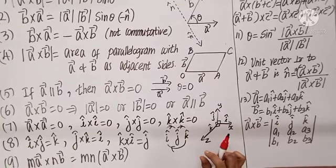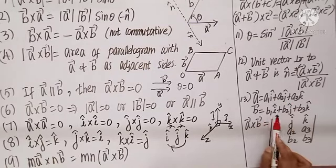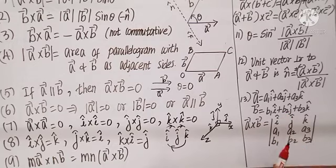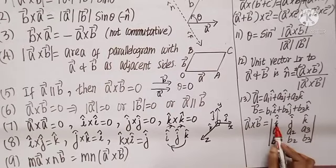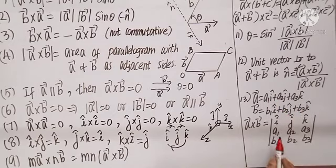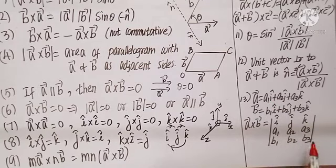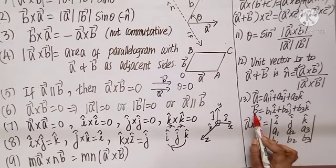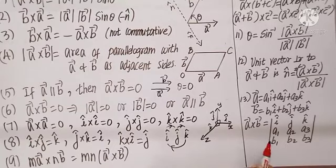To perform cross product when A vector = A1·i + A2·j + A3·k and B vector = B1·i + B2·j + B3·k, we use the determinant method. The first row is I, J, K — the three unit vectors. The second row is the components A1, A2, A3, and the third row is B1, B2, B3. Expanding the determinant gives the A cross B answer.